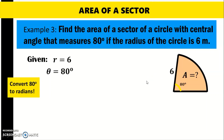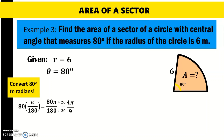Since the given measure of the angle is in degrees, we need to convert that to radians. Converting 80 degrees to radians: 80 times pi over 180 gives 80 pi over 180. Dividing both the numerator and denominator by 20 to simplify, we get 4 pi over 9. So 80 degrees is equivalent to 4 pi over 9, and that is the value we are going to use in the equation.